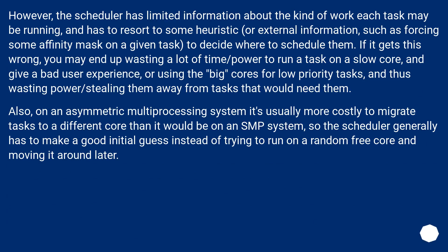However, the scheduler has limited information about the kind of work each task may be running, and has to resort to some heuristic or external information — such as forcing some affinity mask on a given task — to decide where to schedule them. If it gets this wrong, you may end up wasting a lot of time and power running a task on a slow core giving a bad user experience, or using the big cores for low-priority tasks and wasting power or stealing them away from tasks that would need them. On an asymmetric multiprocessing system it's usually more costly to migrate tasks to a different core than on an SMP system, so the scheduler generally has to make a good initial guess instead of trying to run on a random free core and moving it later.